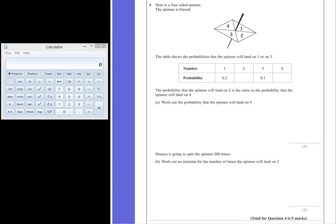Question 4. Here is a four-sided spinner. The spinner is biased. The table shows the probabilities that the spinner will land on a 1 or a 3. The probability that the spinner will land on 2 is the same as the probability the spinner will land on 4.